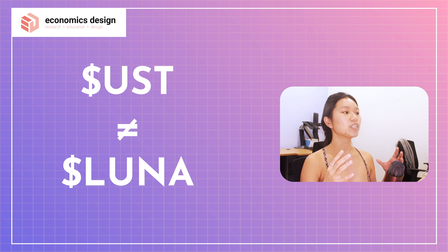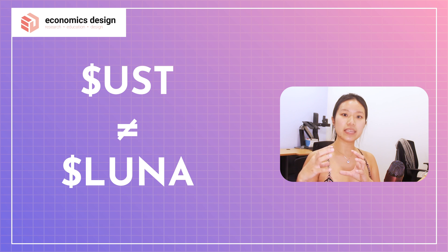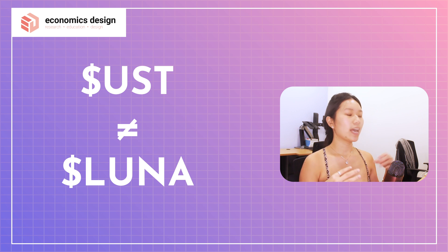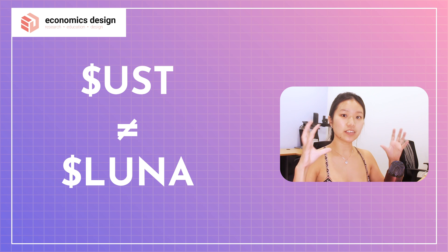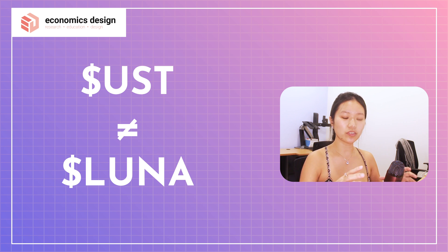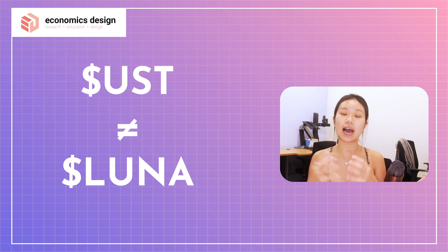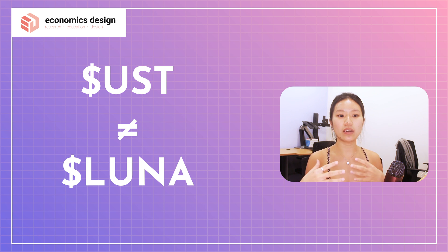Firstly, UST is not Luna. Luna is the native token where users have to stake Luna to be a validator in the Terra blockchain, and UST is just a stablecoin. Both of them exist on the Terra ecosystem, but they are not the same. Let's look deeper to understand how they interact with each other and how they are affected by each other.